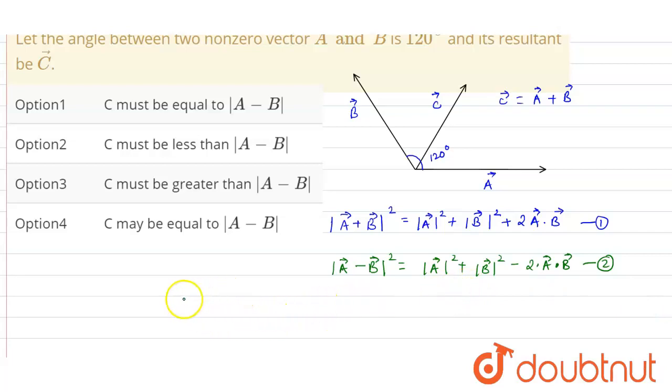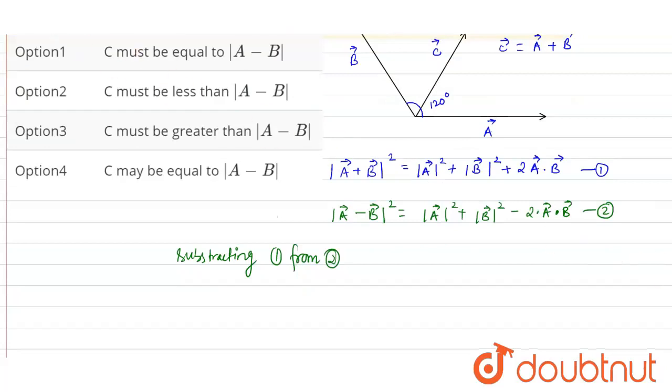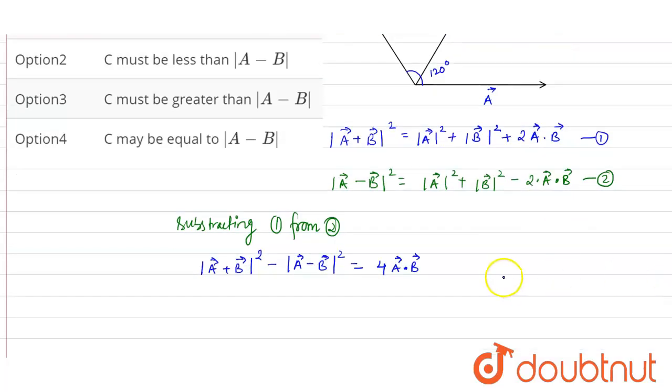Now, subtracting 1 from 2, what we will get is mod of A vector plus B vector whole square minus mod of A vector minus B vector whole square will equals to 4 times A vector dot B vector.